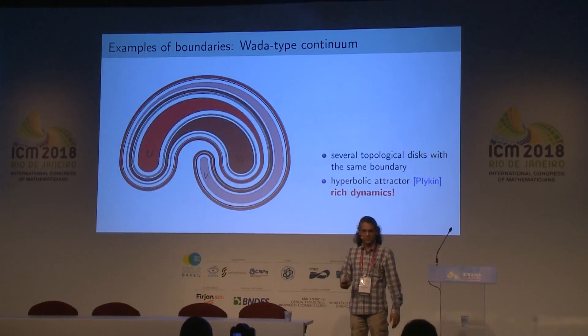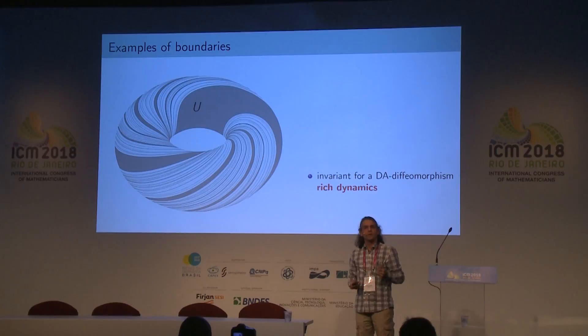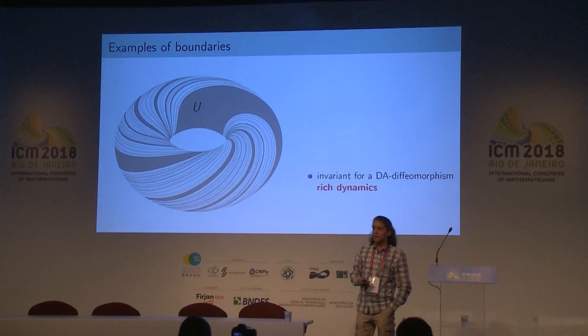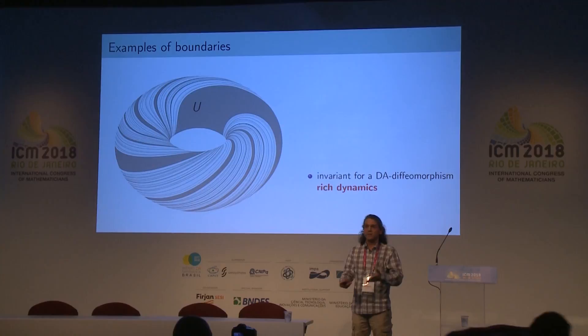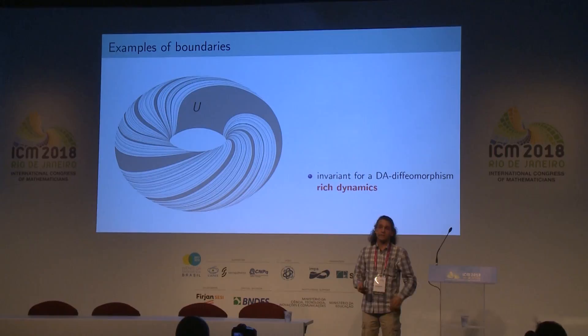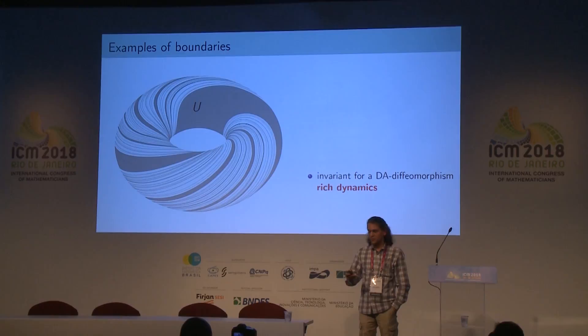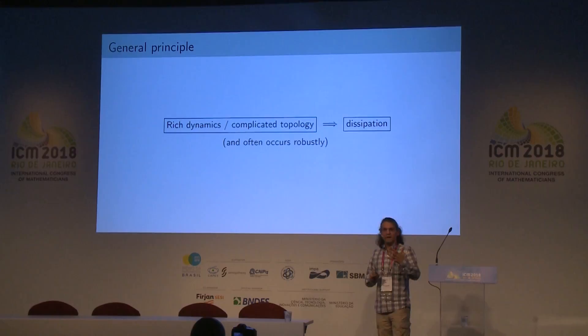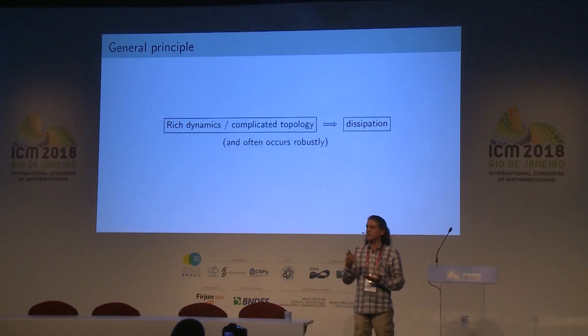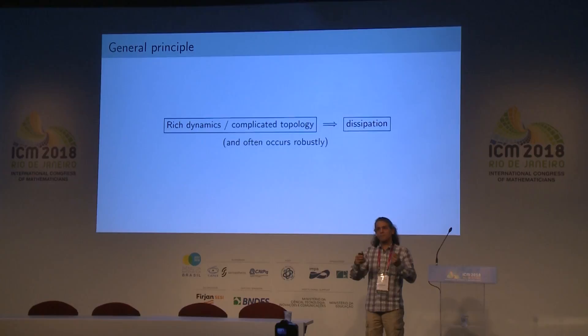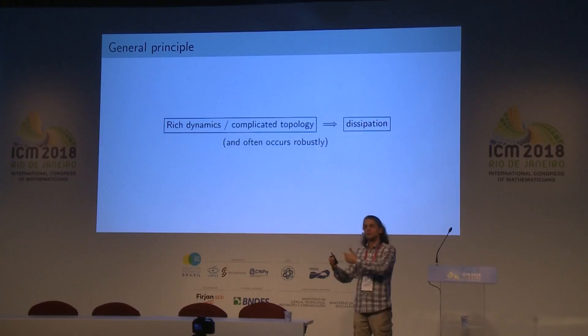A similar example is on the torus, where you can have a disk that spirals around the torus and accumulates in some set locally like a Cantor set times an interval — appearing for instance in the DA diffeomorphism, where the boundary of the disk contains dynamics semi-conjugate to an Anosov diffeomorphism. When you see these examples, you notice that whenever you have rich dynamics in the boundary of the disk, this forces some complicated topology in the boundary, and you always see some kind of area dissipation — some contraction going on near the boundary. This seems like a general principle.